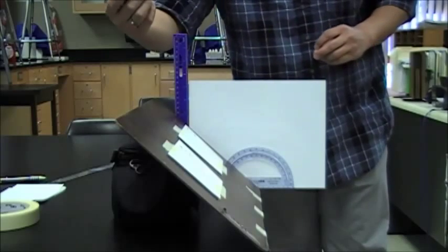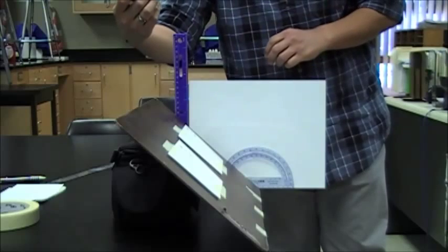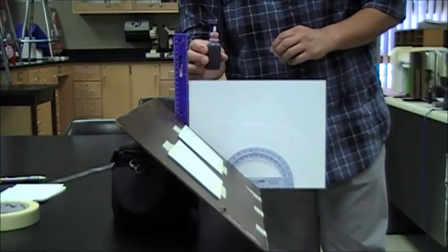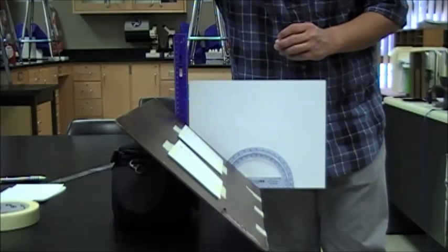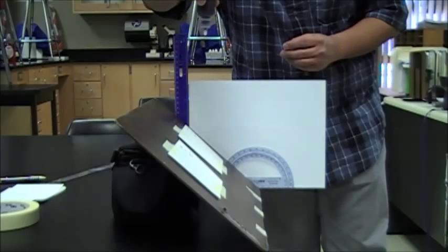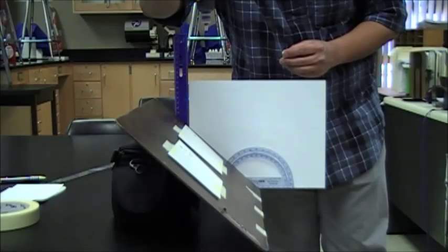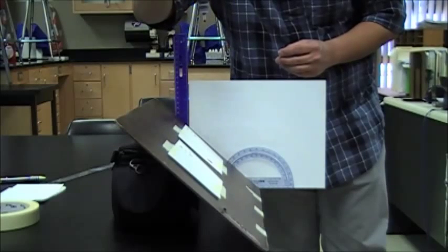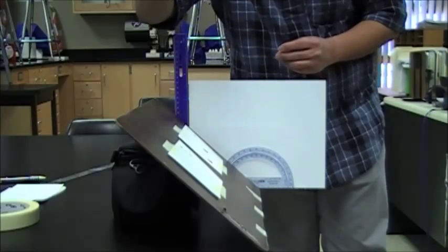From a height of 30 centimeters, take your simulated blood and carefully drop two drops side by side on the white index card at your assigned angle. The first drop is trial one. The second drop is trial two.